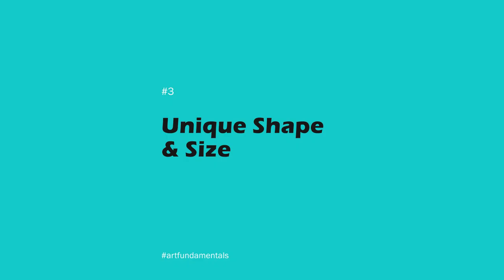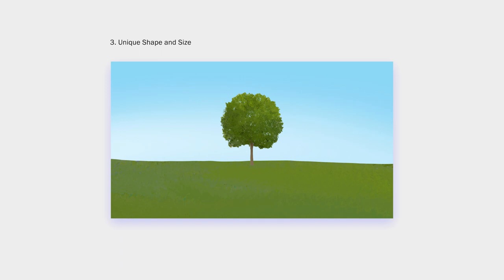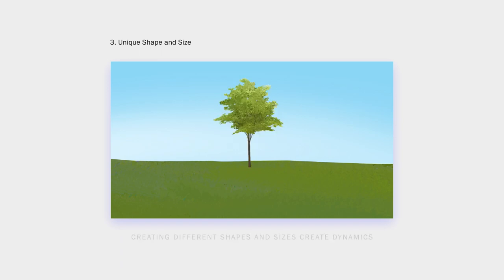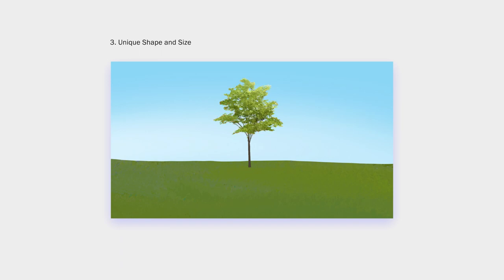Every shape in your drawing should be unique, and every size should be different too. Some basic shapes like circles and squares are so common that they just become boring and have less impact when we see them. A circular tree just looks plain and boring. But it becomes more interesting if you vary the shapes and sizes of the branches and leaves in different parts — not just a simple circle. We can also use the object spacing from example number two earlier to add variety to the branches and the overall structure of the tree.